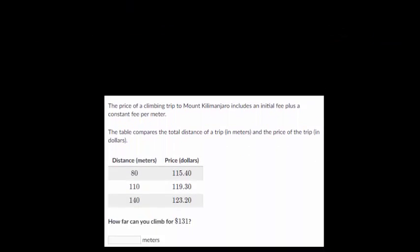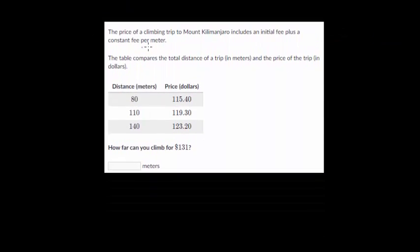So let's try another problem. The price of a climbing trip to Mount Kilimanjaro includes an initial fee plus a constant fee per meter. So initial fee, that's usually our y-intercept, plus a constant fee per meter - that's our slope.